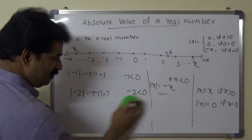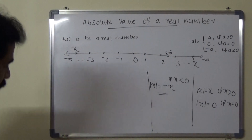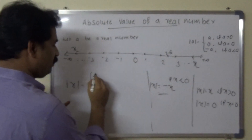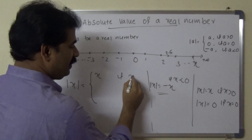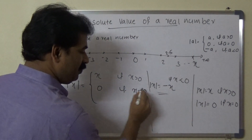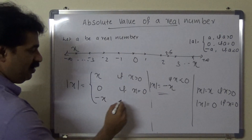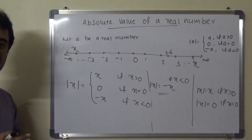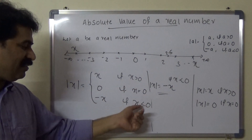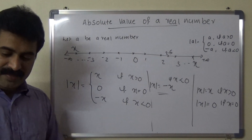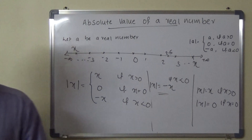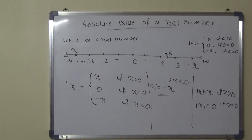Combining all three results: modulus x equals x if x is greater than 0; modulus x equals 0 if x equals 0; modulus x equals minus x if x is less than 0. I hope you enjoyed my class. Thank you for watching.